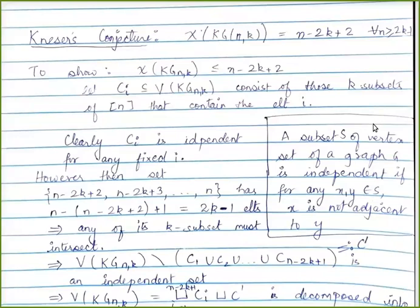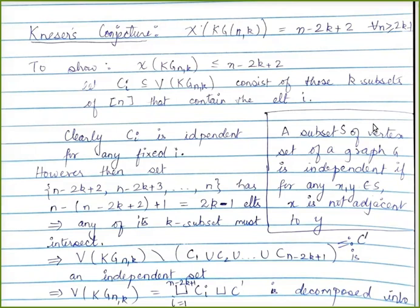Now comes the Kneser conjecture: the graph KG_{n,k} has chromatic number exactly n − 2k + 2, whenever n ≥ 2k − 1. The condition n ≥ 2k − 1 is necessary, since otherwise you cannot even find two disjoint k-subsets. We prove this in two steps: first show the chromatic number cannot exceed n − 2k + 2, then show it is at least n − 2k + 2. Together these give equality.